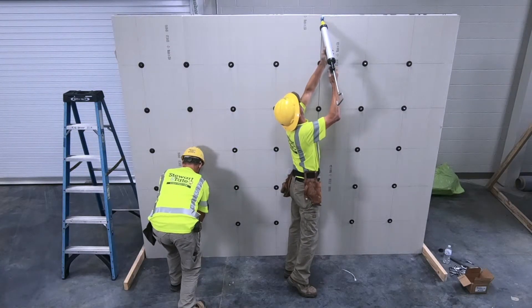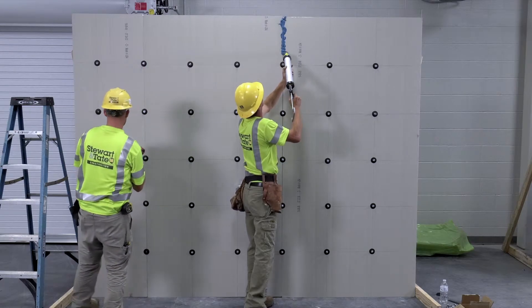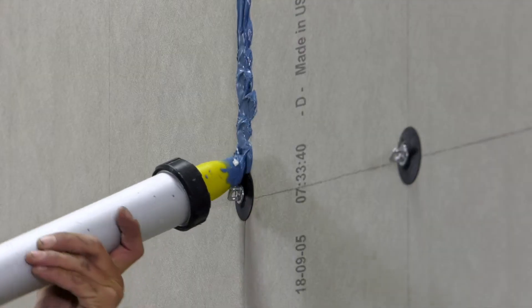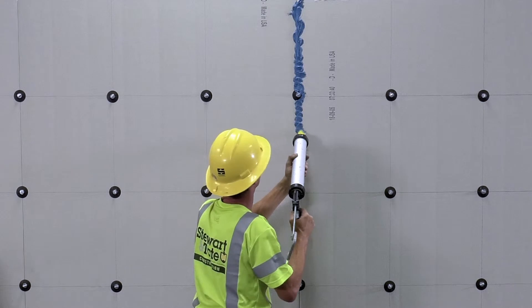After the washer and anchors are installed, XCI Barabond, a liquid-applied detail sealant, may then be applied to the joints between polyiso boards.